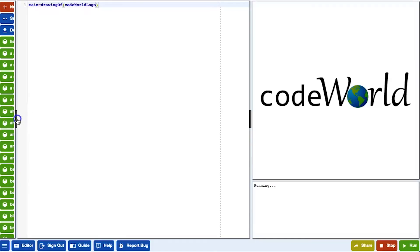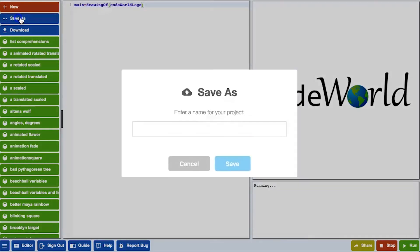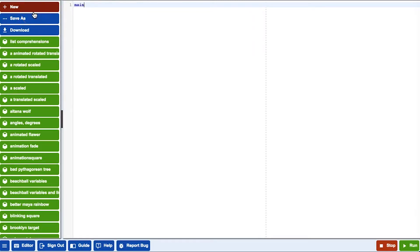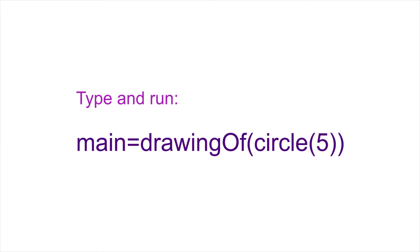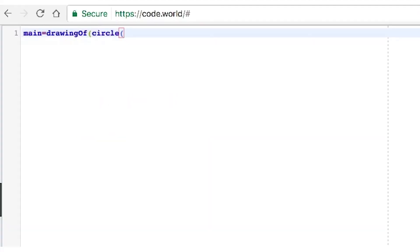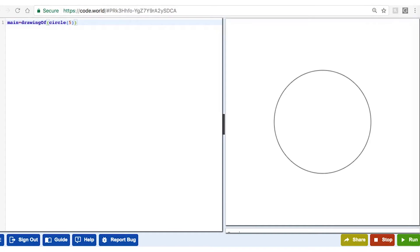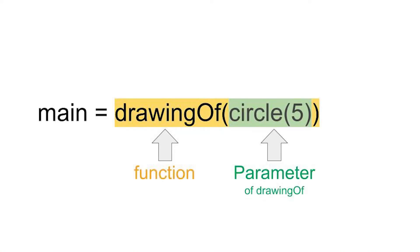If you want to save that program, make sure you signed in. Now click the Save As button on the left-hand side. Code world will ask you for a name. Let's call it My First Program. Click OK and it's saved. Now we want to start a new program, so click the New button on the left-hand side. Type main equals drawing of circle 5 and press run. You should see a circle or an error message telling you what to fix. As a side note, you should have started a new program on a clean page. You should never have two mains. There is only one main for the whole program. In this program, drawing of is a function and circle 5 is the parameter.